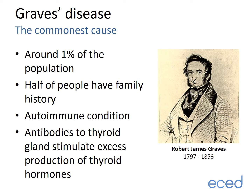Graves disease is the commonest cause and over a lifetime affects around 1% of people. Around 80% of this risk is inherited or genetic, with the remaining 20% related to as yet unidentified factors in the environment. Half of people with Graves disease will have a relative with the condition. It was first described by the Irish physician Robert Graves in the 19th century and later identified as an autoimmune condition where the body's immune system produces antibodies which stimulate the thyroid gland to make excessive amounts of thyroid hormone.